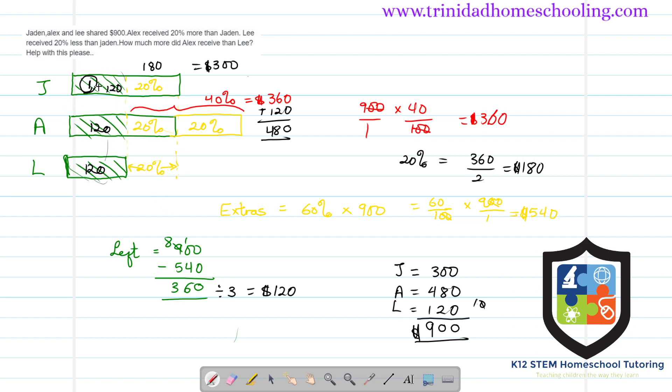And Alex has 40% more than Lee, and that 40% is $360, which is what the question asked for: How much more did Alex receive than Lee?